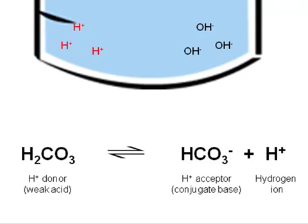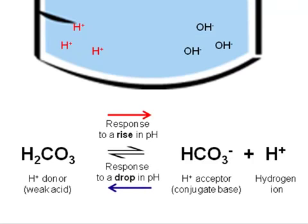In this equation, we'll run in both directions to prevent dramatic changes in pH. It will run to the right in response to a rise in pH, and it will run to the left in response to a drop in pH.